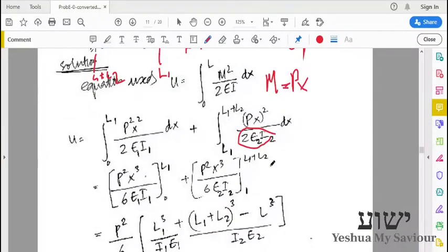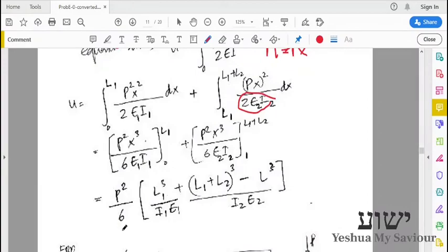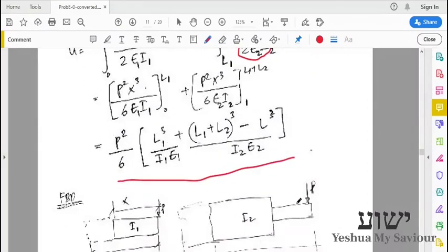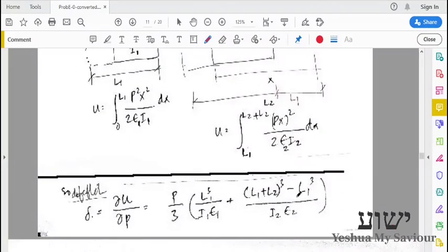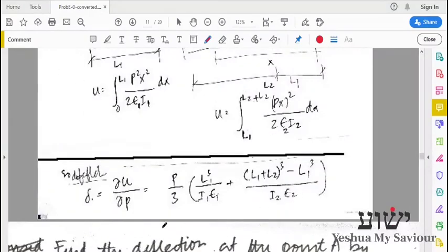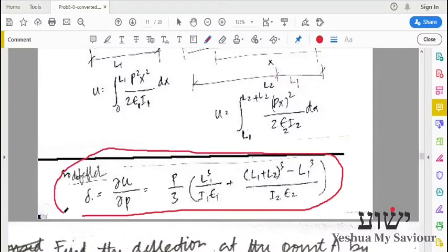This is a very simple integration, so we can integrate it and we get this equation. After that we can differentiate it with respect to P to get the deflection. That concludes this.